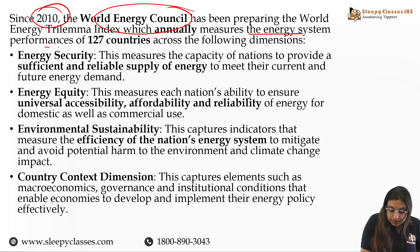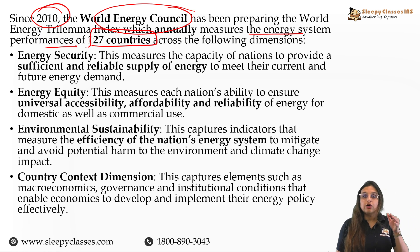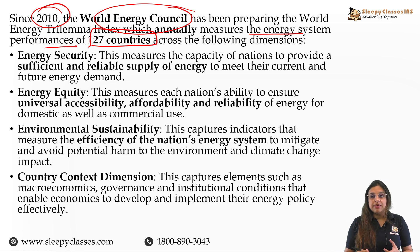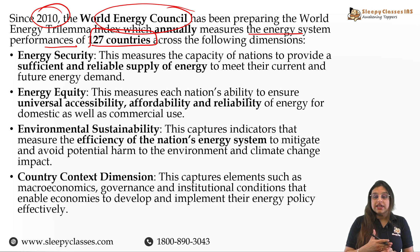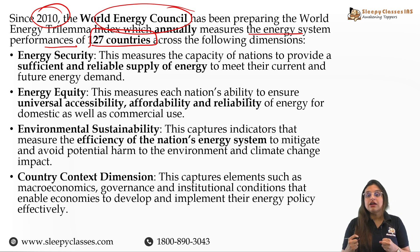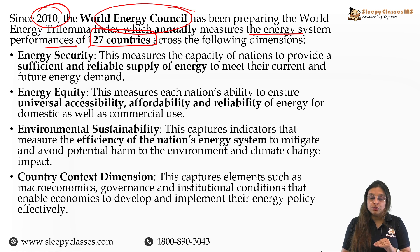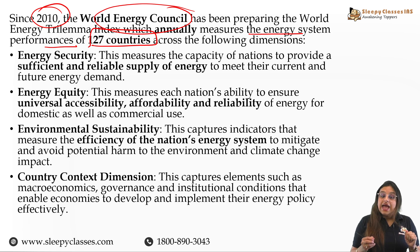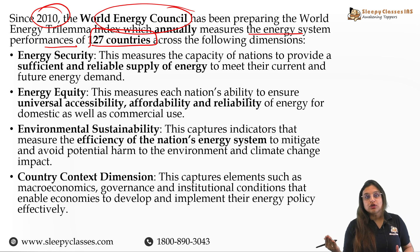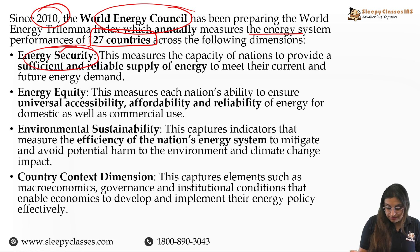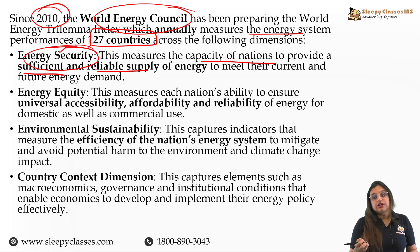The index measures energy system performances of 127 countries across the following dimensions. Energy Security means a country providing sufficient and reliable sources of energy — not only for current demand but also for future demand — to run the economy of the country.